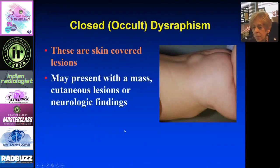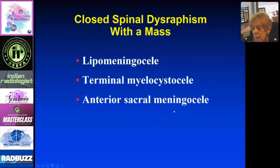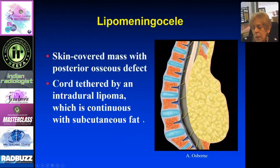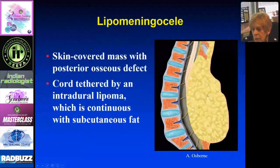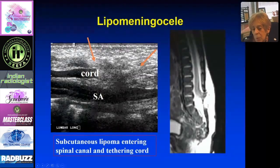Occult dysraphism lesions are skin-covered. Those presenting with a palpable mass include the lipomeningocele, terminal myelocystocele, and anterior meningocele. The lipomeningocele is similar to the myelomeningocele but is skin-covered and contains fat — a lipoma that is contiguous with the subcutaneous fat — and it tethers the cord. On ultrasound, the cord is surrounded by echogenic material that is continuous with the fat in the back. The cord can be seen going into the fat.